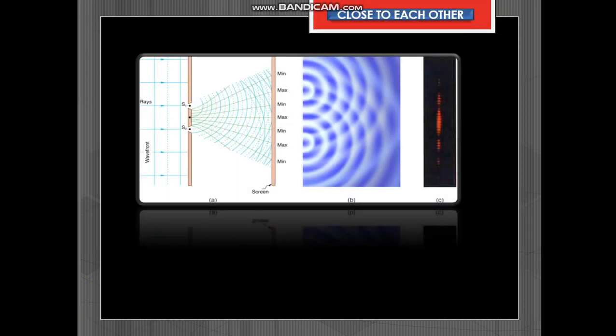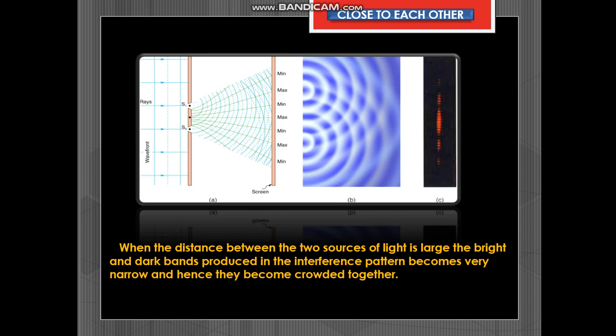The two sources should be close to each other. Now when the distance between the two sources of light is large, the bright and the dark bands produced in the interference pattern becomes very narrow and hence they become crowded together. The pattern observed is therefore not clear. So hence they should be close to each other.